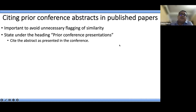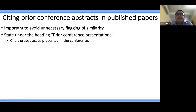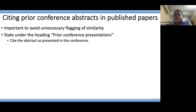Citing prior conference abstracts in published papers is an important consideration. As residents, you often publish preliminary findings in conference abstracts, and when you publish the full paper, some information — such as the methods — might be duplicated. The similarity checking software may flag this. To avoid unnecessary flagging, state under 'prior conference presentation' that this abstract was presented at a particular conference and provide the online link, so the editor knows the similarity was flagged spuriously.